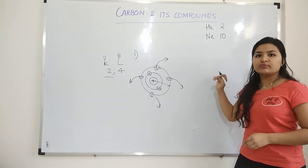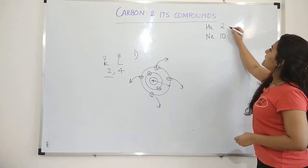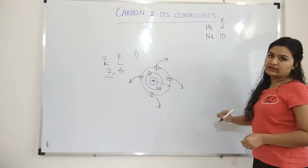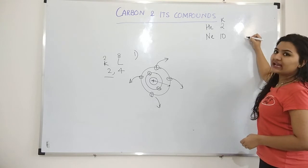Atomic number means the number of protons. That means they have the same number of electrons. Now it will have two electrons. Those two electrons will be in K shell. This will have 2 and 8 electrons.